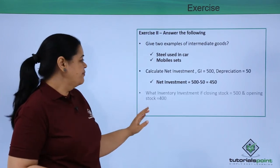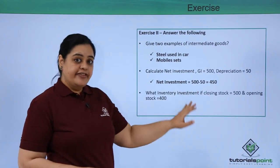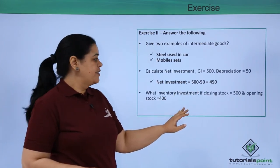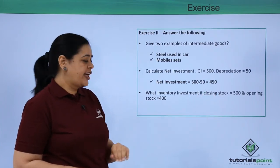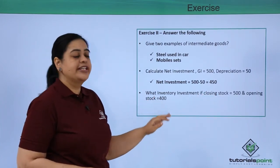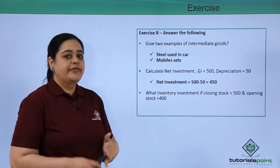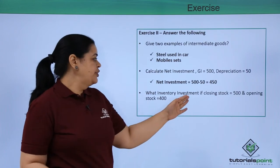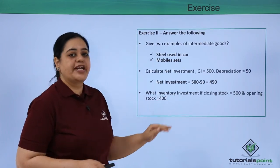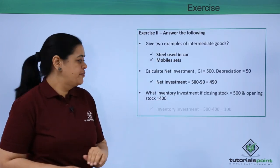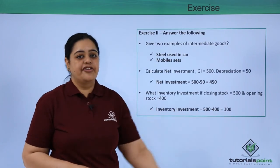Next, what would be the inventory investment if the closing stock is 500 and the opening stock is 400? Inventory investment equals closing stock minus opening stock, which gives us 100.